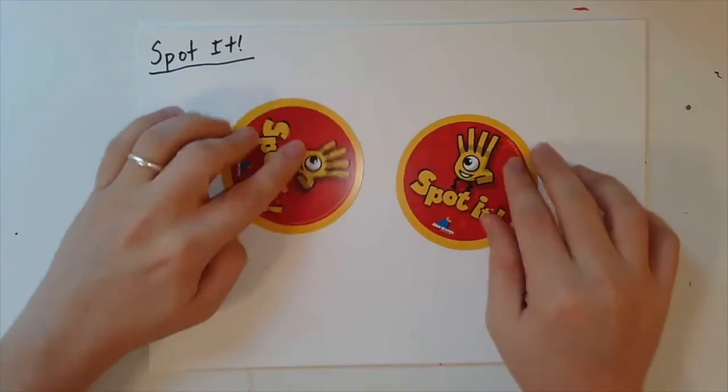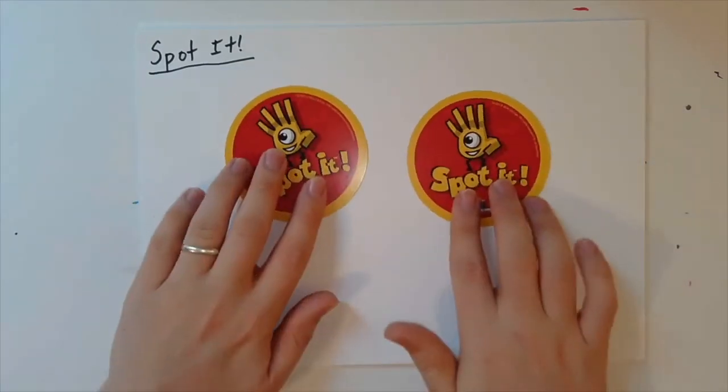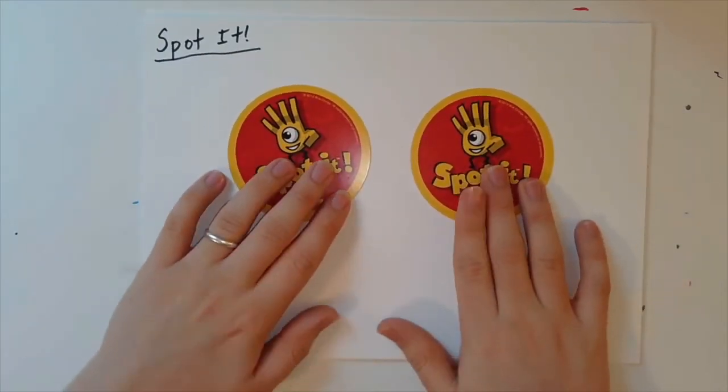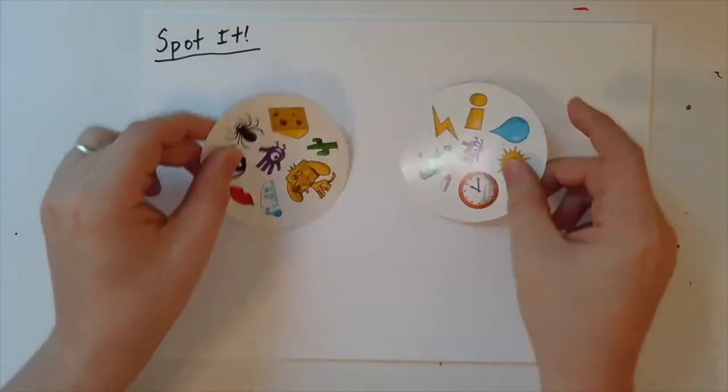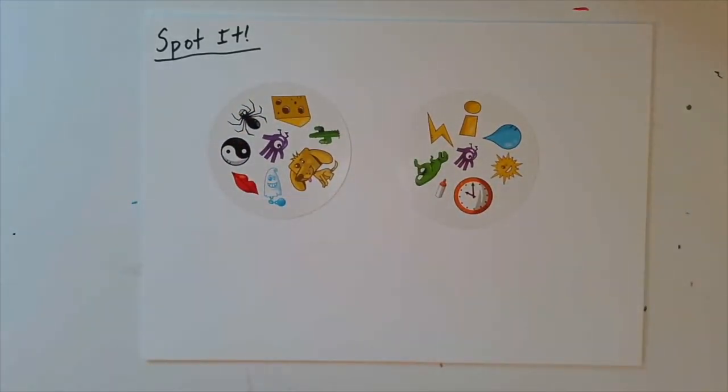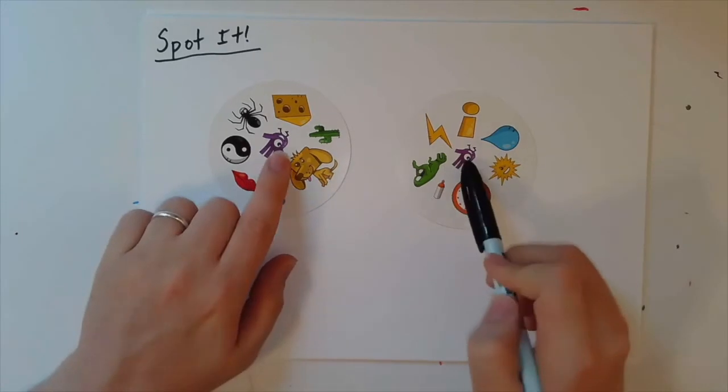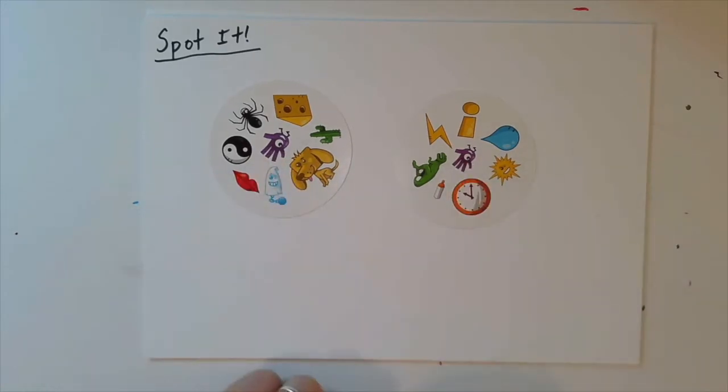So what is this children's game? The way it works is that you put two cards face down and then you and your opponent simultaneously flip them up. As quickly as possible, you are to identify what thing is on both cards. In this instance, you might look very closely and identify, and I'm not very good at this game, that the hand is on both of these cards.